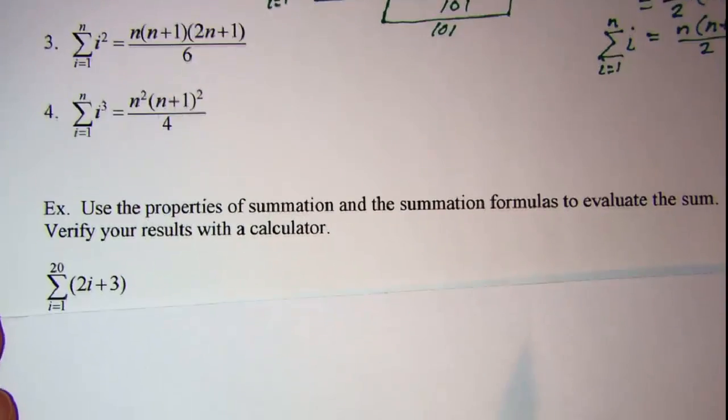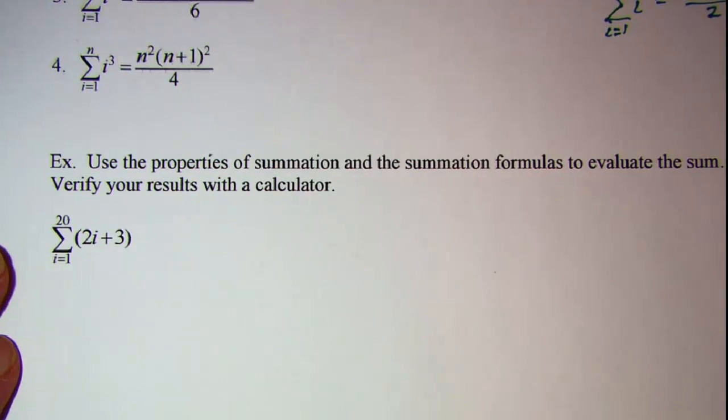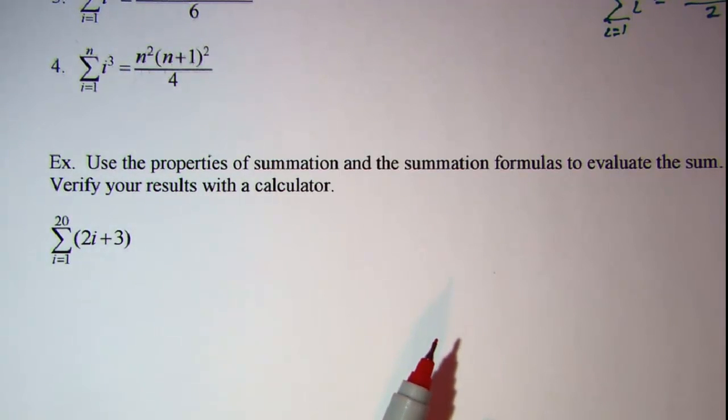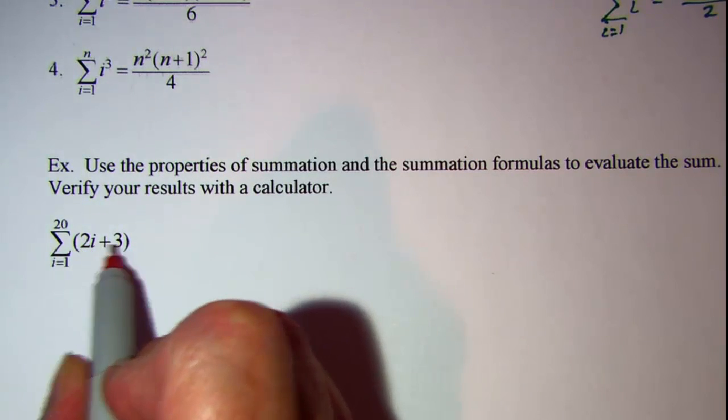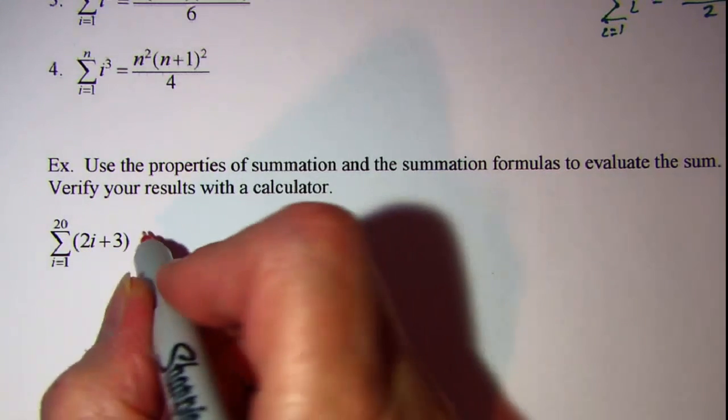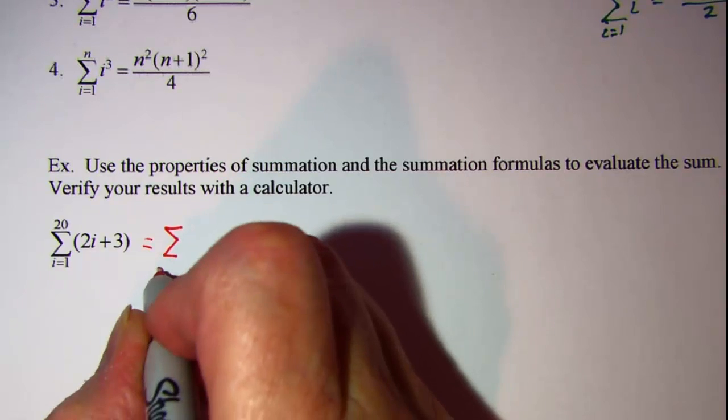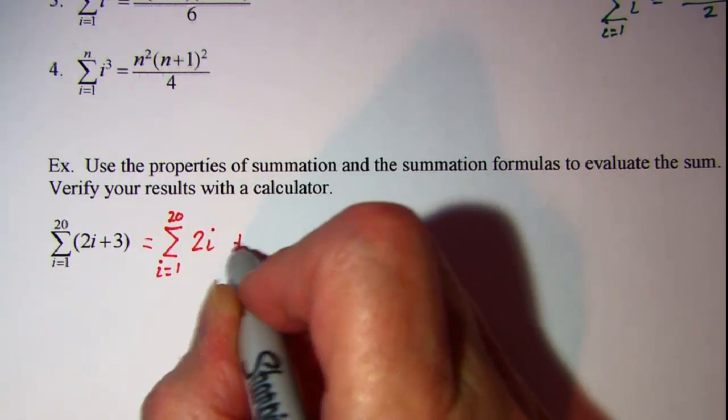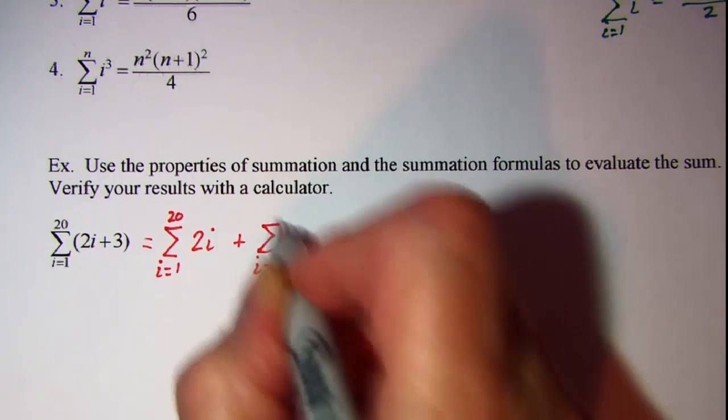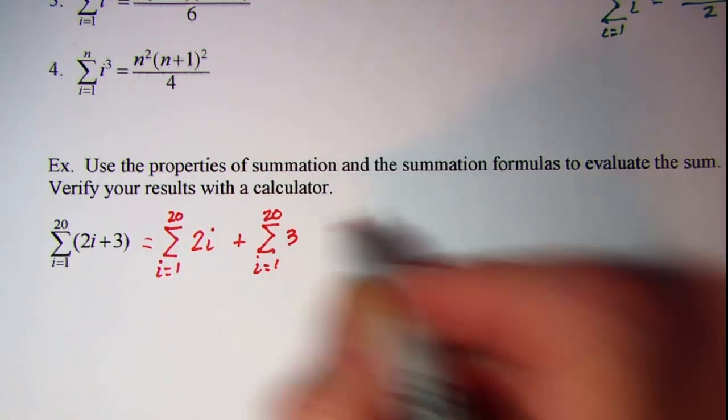Now let's do a problem using these. We're asked to use the properties of summation and the summation formulas to evaluate the sum and verify your results with the calculator. Now we know from our second property of summation that we can split these two terms up and write this as the summation as i goes from 1 to 20 of 2i plus the summation as i goes from 1 to 20 of 3.